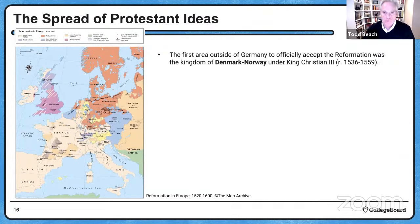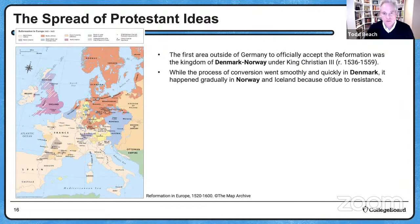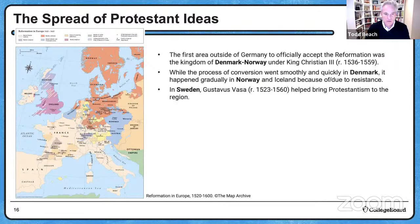The first country outside of Germany to officially accept the Reformation was the Kingdom of Denmark-Norway under King Christian III. While the process of conversion went smoothly and quickly in Denmark, it happened more gradually in Norway and Iceland due to some resistance from the people. In Sweden, it was Gustavus Vasa who helped bring Protestantism into the region.